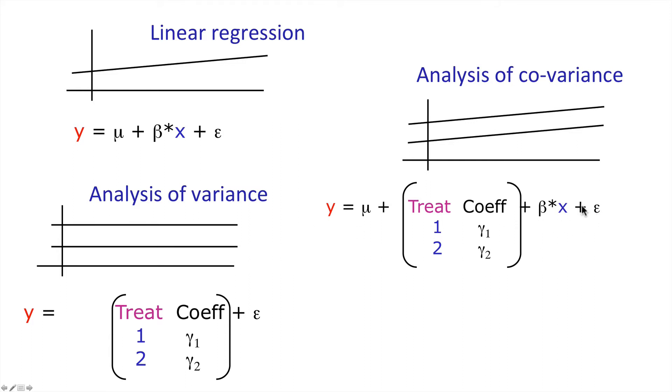We make the same sorts of assumptions about the nature of the error term, that it's normally distributed and fixed variance for whatever level of predictors we're dealing with. In essence, what we are doing here in the simplest form of analysis of covariance is fitting parallel lines. The difference between these lines representing the difference of the treatments, and the gradients of the lines themselves representing the influence of the continuous predictor.